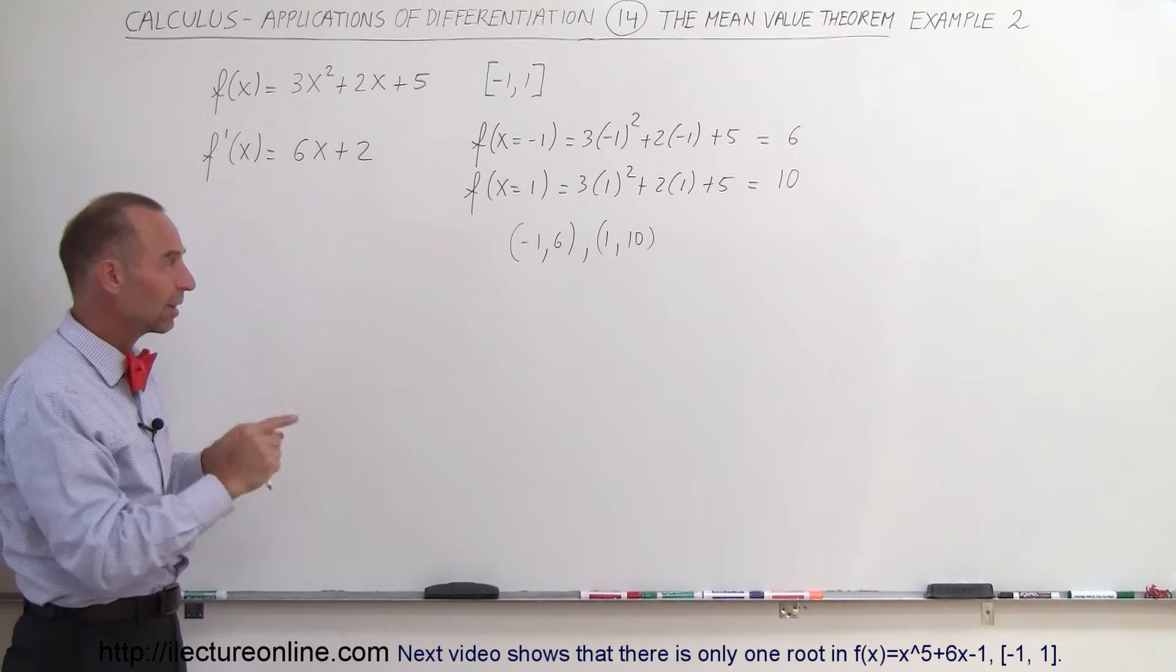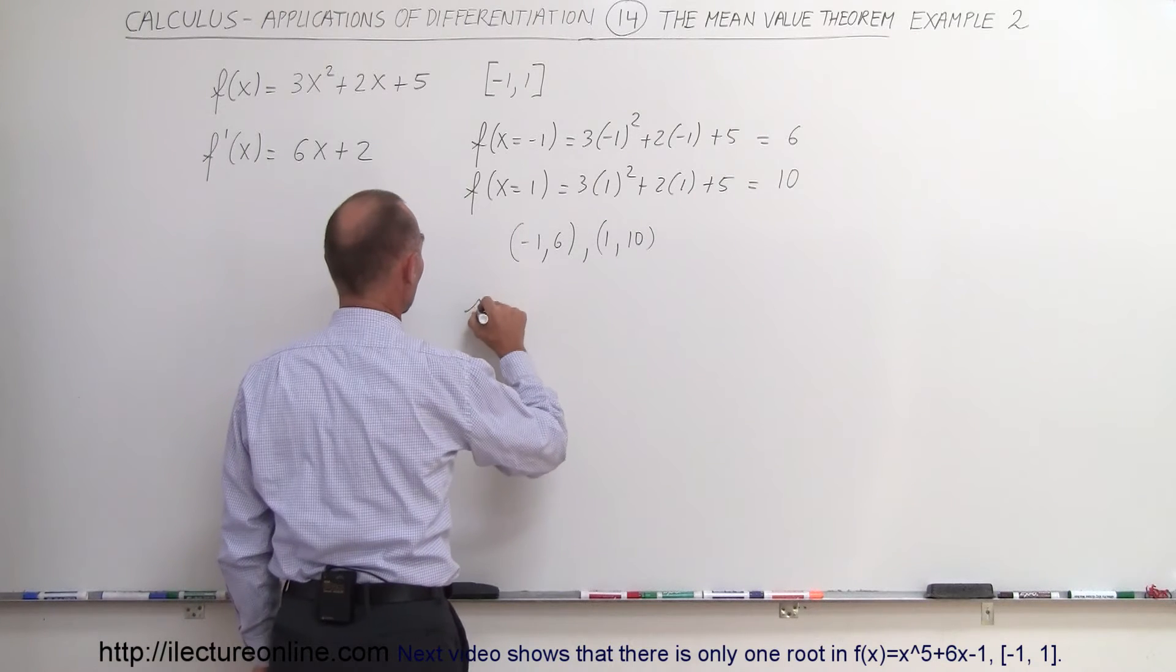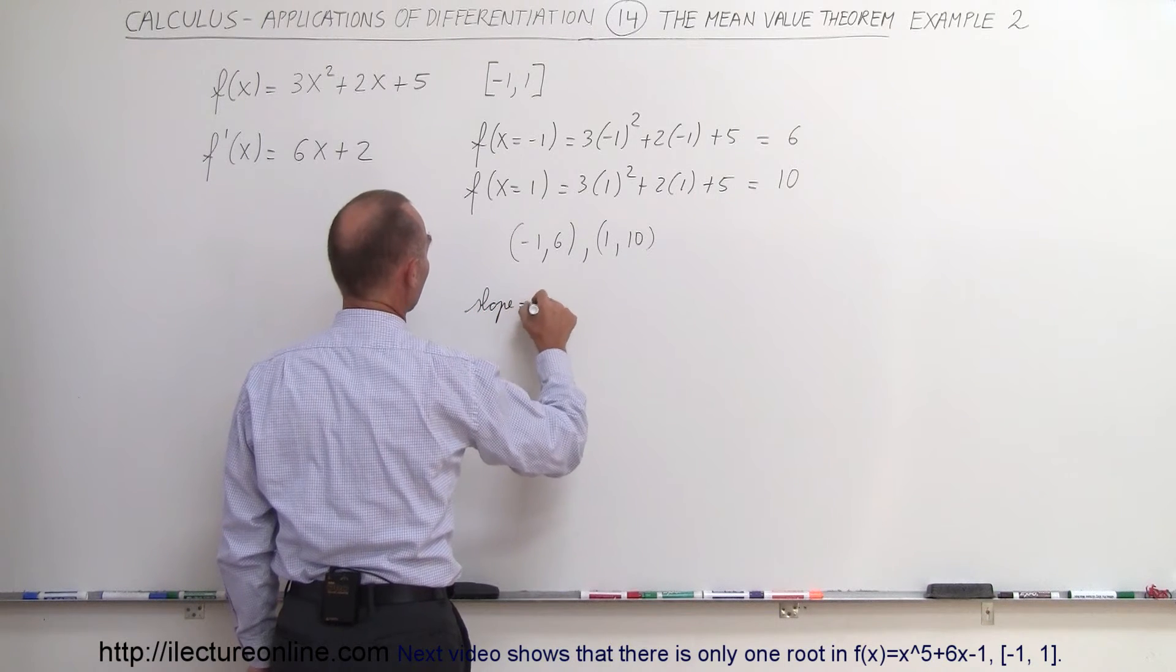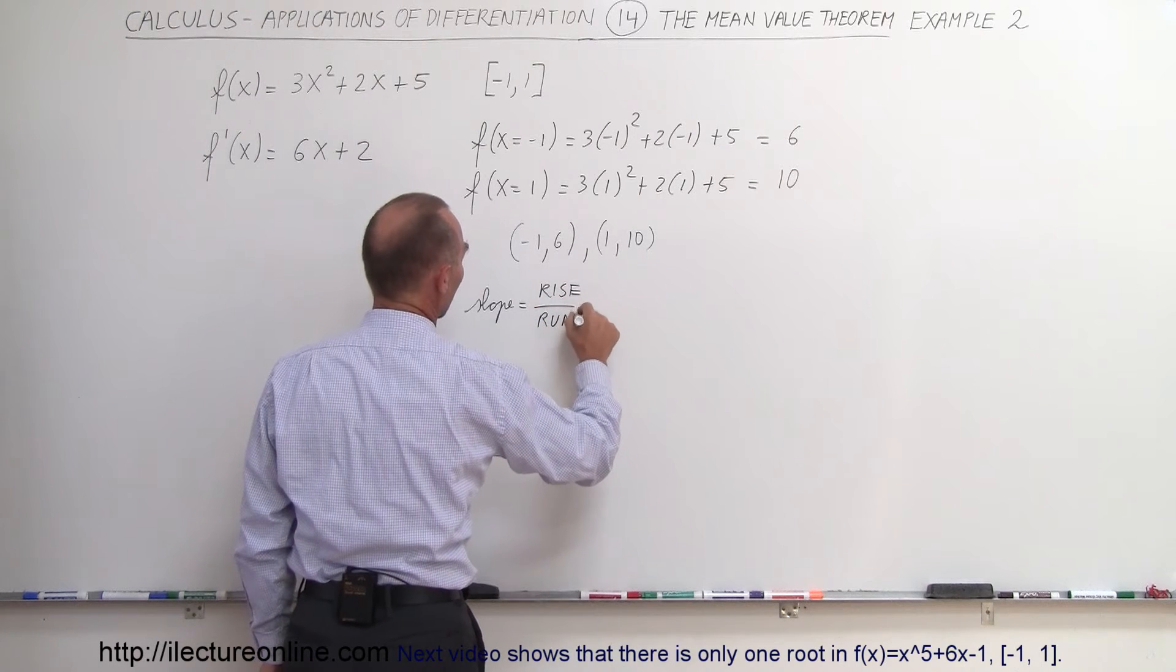We know when connecting with a straight line we should be able to figure out the slope, and the slope can be found by saying the slope is equal to the rise divided by the run, which is equal to